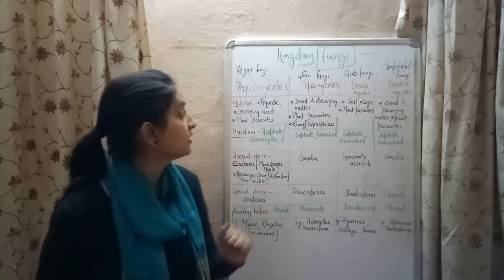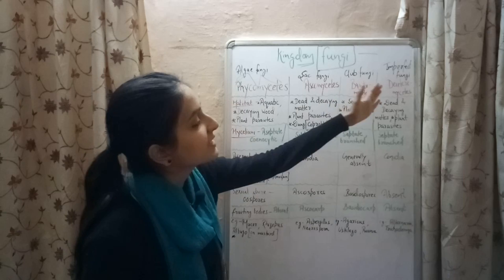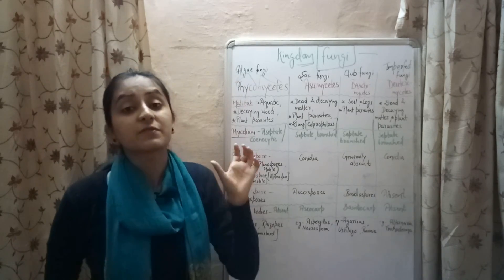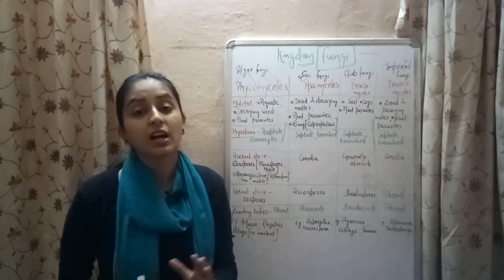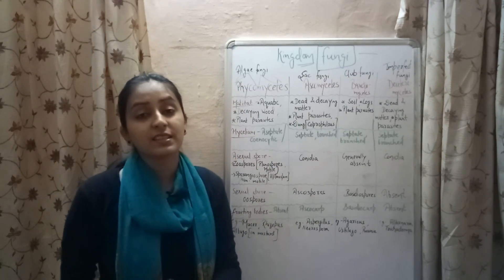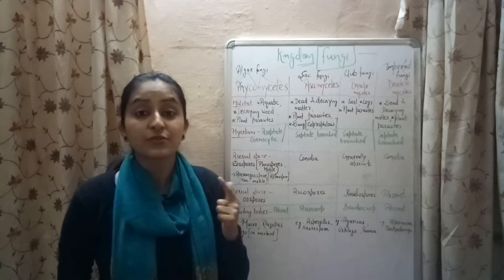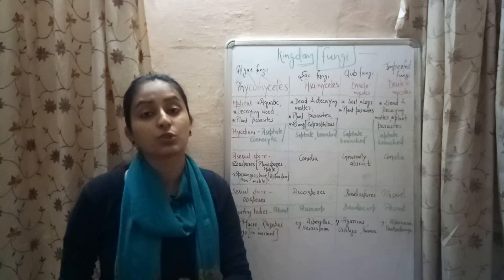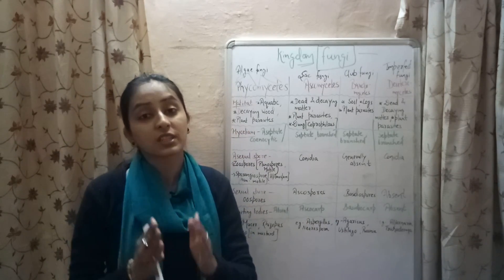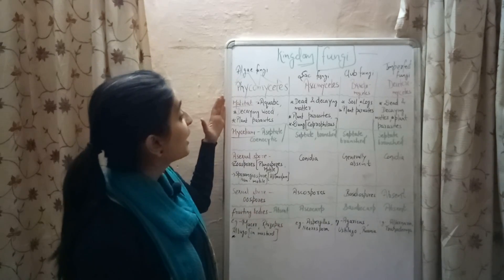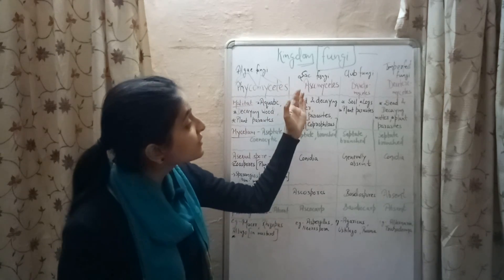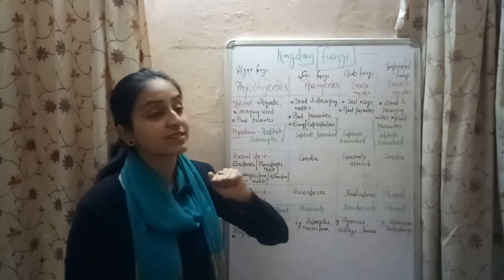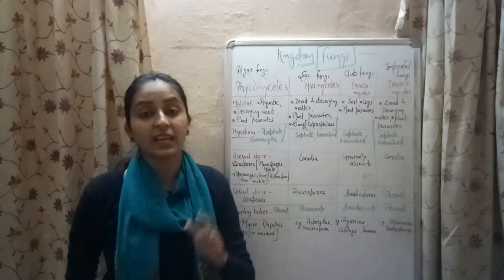Let's look at these four classes. Phycomycetes — जिसमें phyco word means algae and mycetes means fungi — is also known as algal fungi. This is because in Phycomycetes, the cell wall of some organisms is made up of cellulose instead of chitin. Ascomycetes are also known as sac fungi. Basidiomycetes is known as club fungi. Deuteromycetes is known as imperfect fungi — why, we will study later.